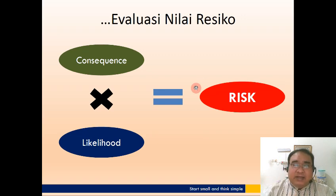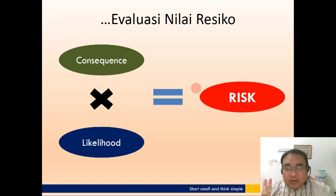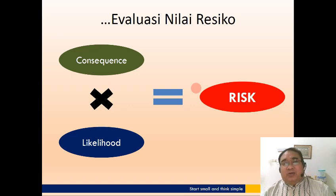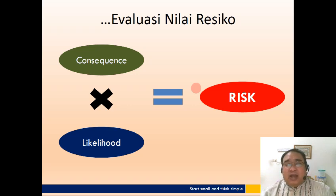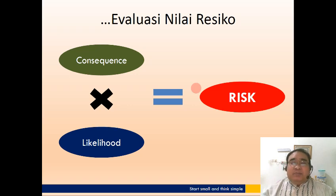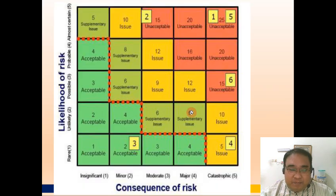Bagaimana kita mengevaluasi nilai resiko? Tentu pada setiap proyek resikonya tidak cuma satu, ada banyak. Kita kalikan dua faktor tadi yaitu severity atau consequences dikalikan dengan likelihood. Ini merupakan nilai indeks resiko. Nanti kita urutkan dari nilai resiko yang paling tinggi sampai paling rendah, dan kita menyusun langkah-langkah kontingensinya diurutkan dari resiko yang paling tinggi ke yang paling rendah, karena kita tidak tahu apakah manajemen daya kita cukup untuk meng-cover contingency plan menangani resiko-resiko tersebut.